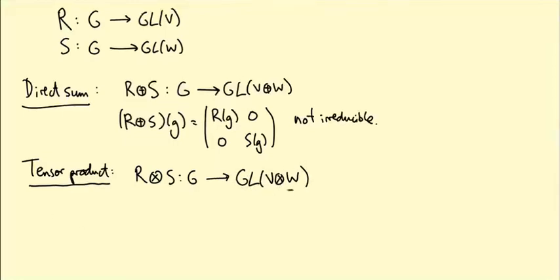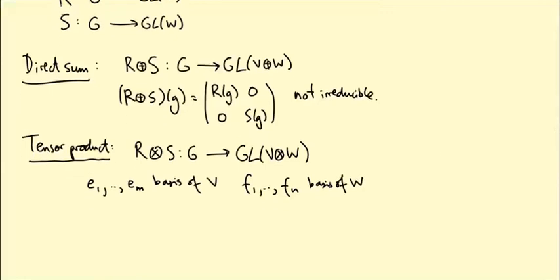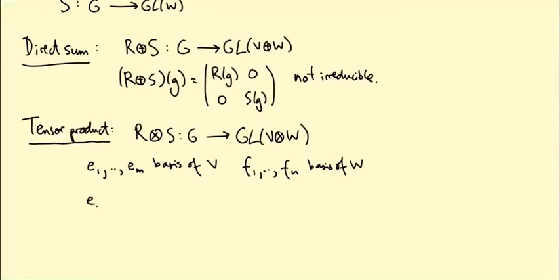What is the vector space V ⊗ W? It's easiest to define by giving a basis. Pick a basis e₁ up to eₘ for V, and a basis f₁ up to fₙ for W. Then the symbols eᵢ ⊗ fⱼ — as i ranges from 1 to m and j ranges from 1 to n — form a basis for V ⊗ W. So this space is m times n dimensional.